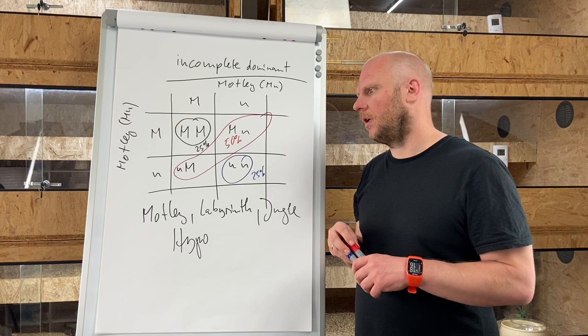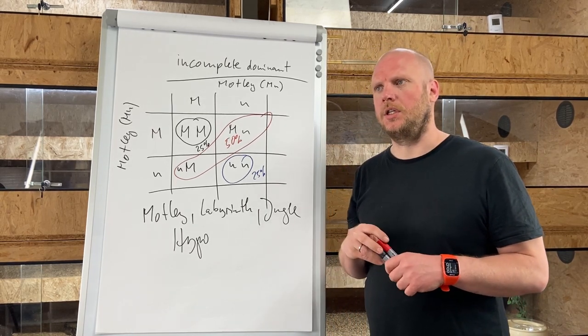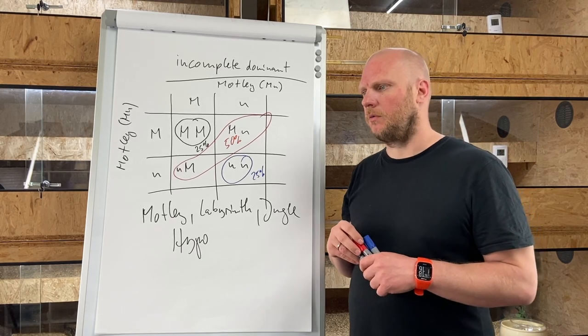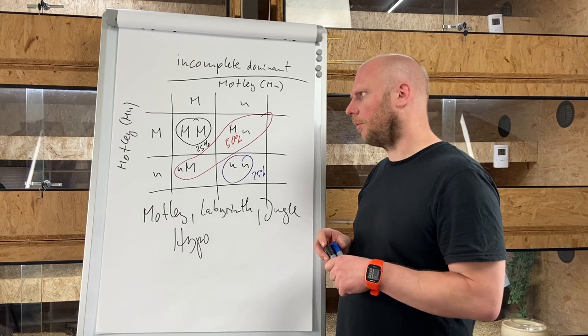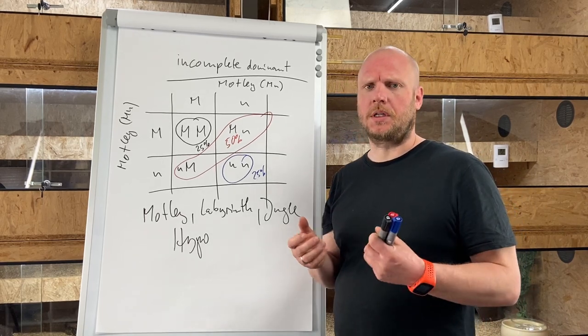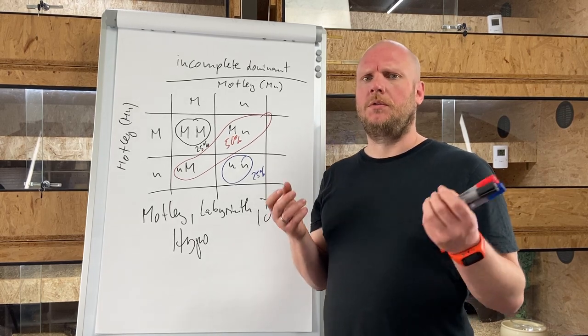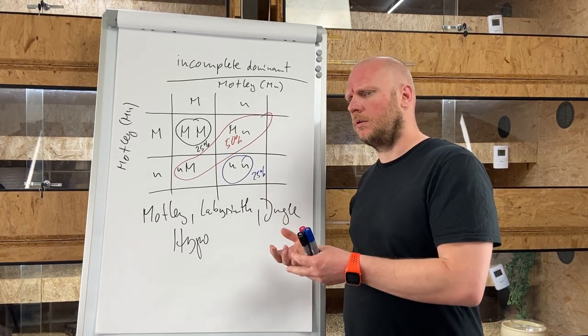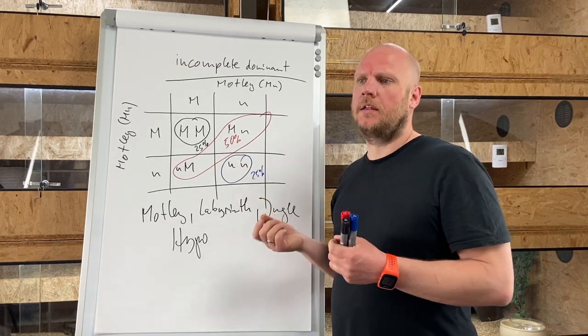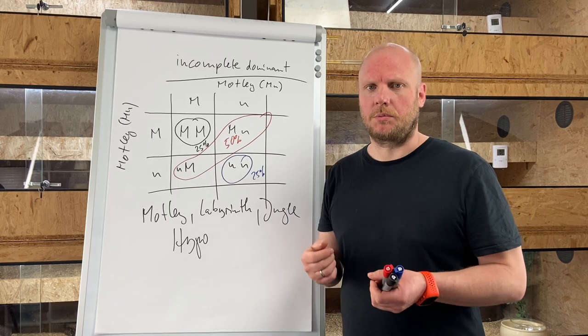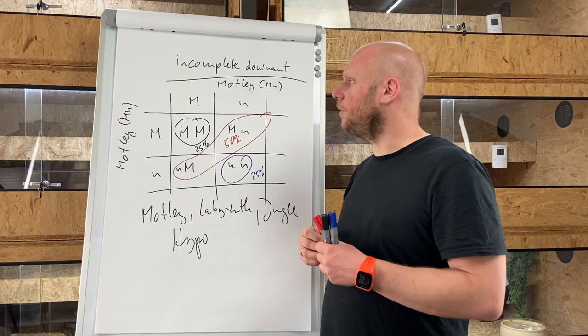Both animals died within one and a half to two years and we've never produced any other super motley on purpose again. Sometimes it can happen if you're just working with motley, for example hypo to motley. However, it's said that they can still produce some super motley.